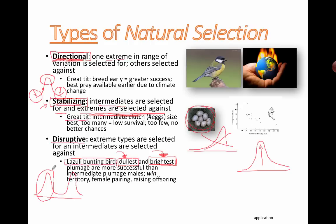The really dull ones are successful because no one notices them — they have sneaky reproductive methods. The ones that are really flashy also survive. But if you're somewhere in between, just average, with kind of boring, fancy colors and not super dull either, really no one pays attention to you and you get no chance of making babies. So if you're really super dull or really super bright, you have higher chances of surviving, if you're a lazuli bunting bird.